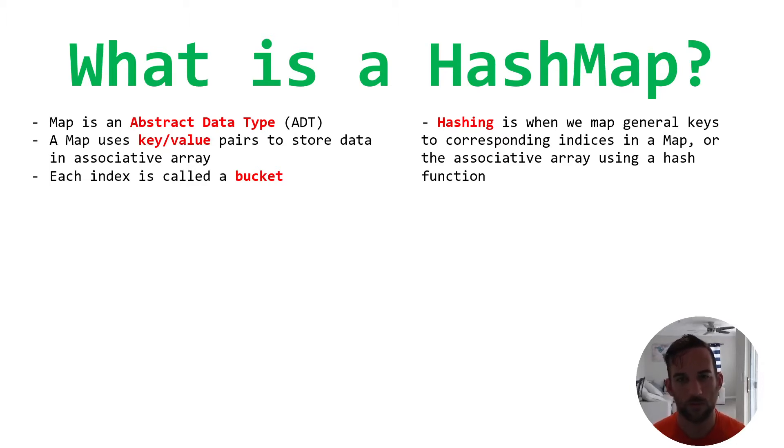So then what does the Hash mean in HashMap? Well, the Hash in HashMap stands for hashing, and that's just a way to map keys to the indexes in the map using what's called a hashing function, which we'll get into.